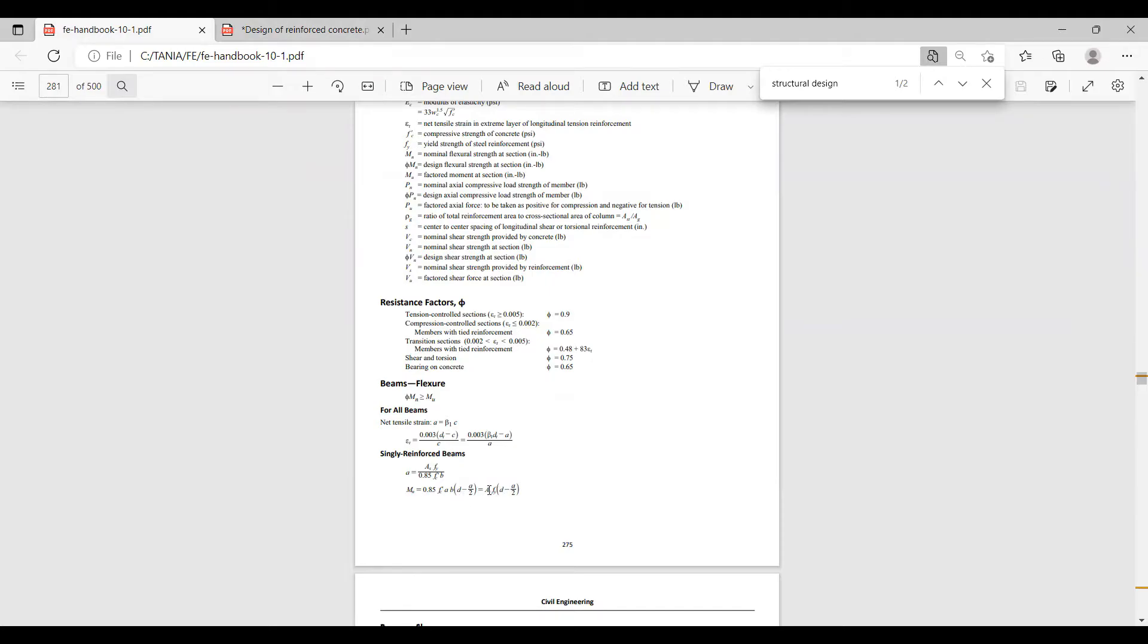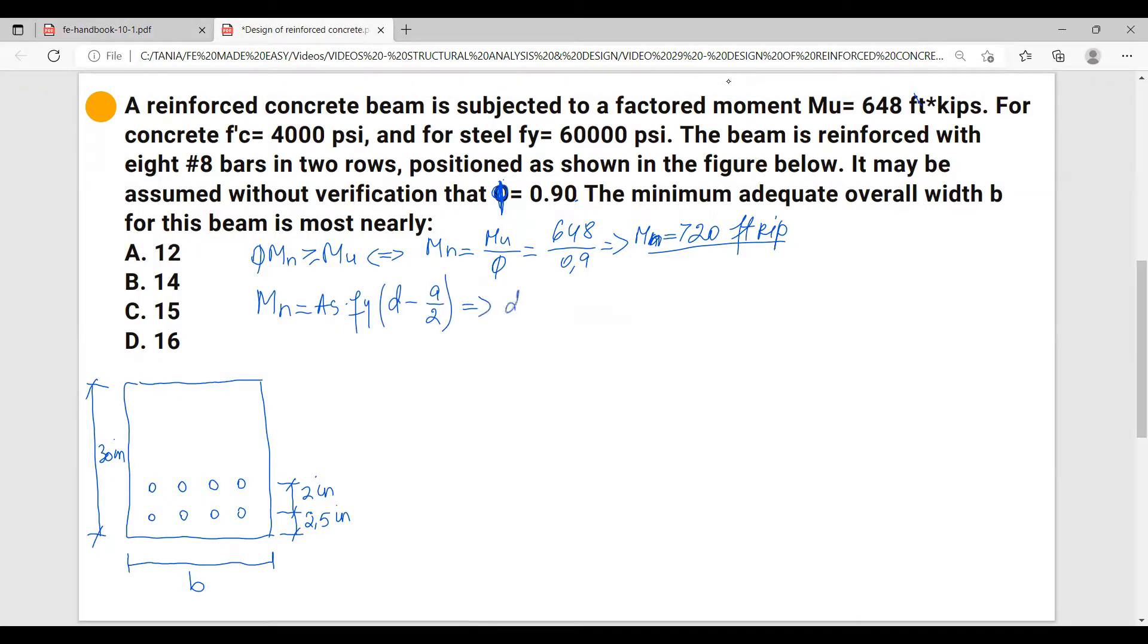Mn, we have two formulas here we can use, either this one or this one. So I need to calculate b, so we can calculate b out of this formula, out of the a formula. But then we need to calculate a as well. So we know Mn, right? We can use this formula to calculate a. Let me write this formula down: Mn equals As·fy·(d - a/2).